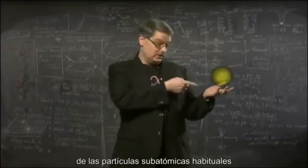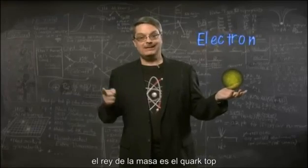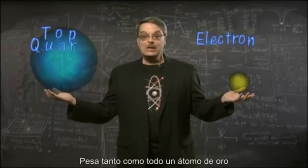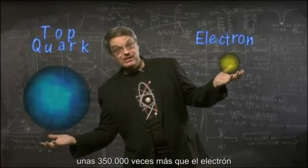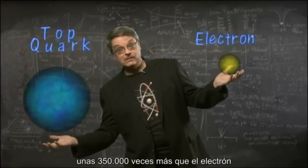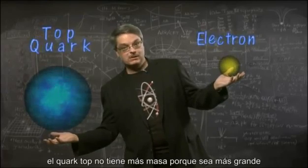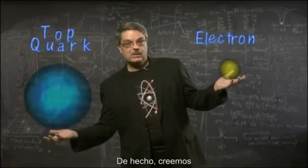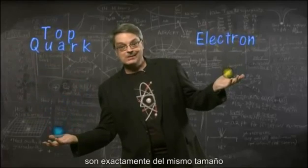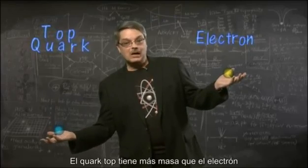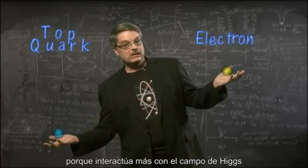In our analogy, Eddie is a massive particle made massive by interacting a lot with the water. The lightest of the familiar subatomic particles is the electron, while in the subatomic world the king of mass is the top quark. It weighs about as much as an entire atom of gold — about 350,000 times more than the electron. The top quark is not more massive because it's bigger. In fact, we believe that both the top quark and the electron are exactly the same size — indeed, they both have zero size. The top quark is more massive than the electron simply because it interacts more with the Higgs field.